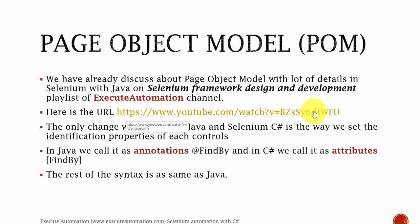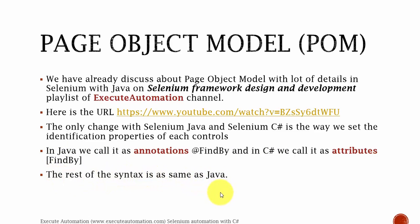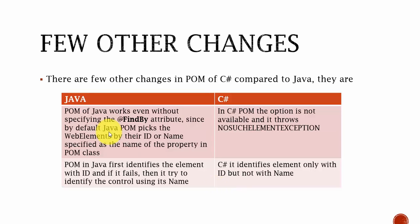I'll paste that URL in the description of this video so you can navigate to that particular video and understand POM in greater detail. The only change between Selenium Java and Selenium C# is the way we set the identification property for each control. In Java we call it annotations, and in C# we call it attributes. In Java we specify using @FindBy, and in C# we specify FindBy using open and closed square brackets.